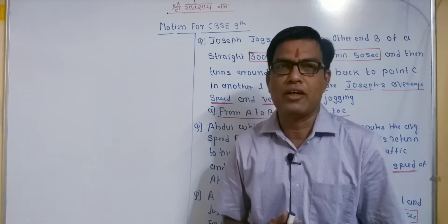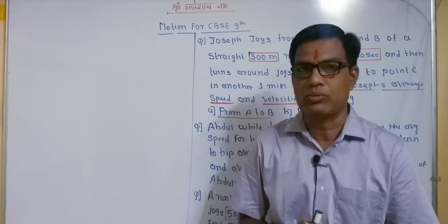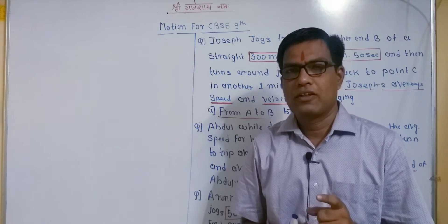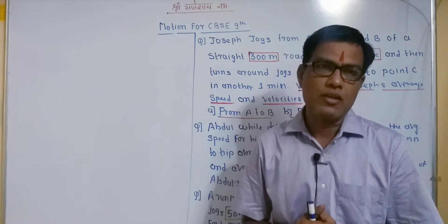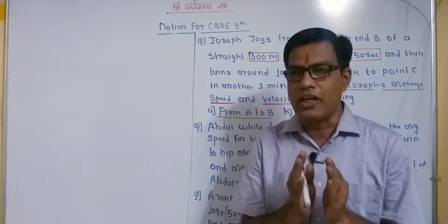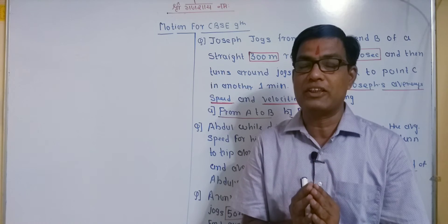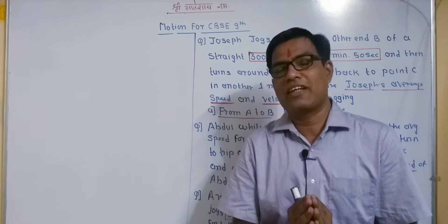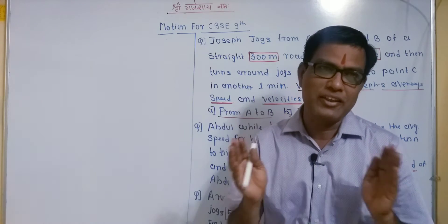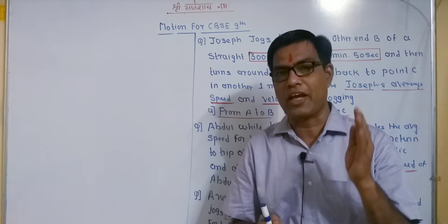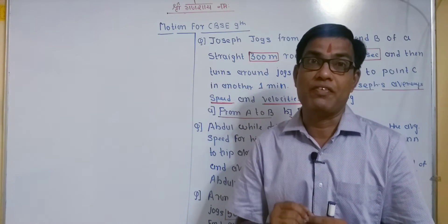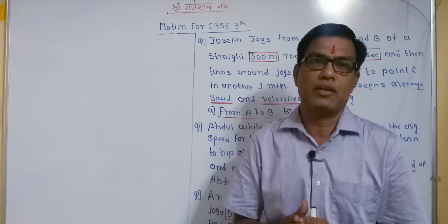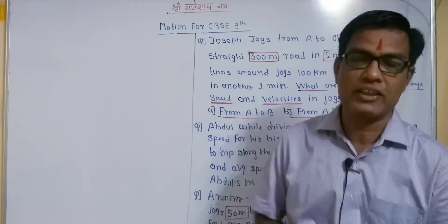These examples are from the exercise in your NCERT textbook, in the motion chapter. In physics, all examples are very easy, but if you can't understand the theory behind them or the given conditions in an example, you can't get the right answer. You must listen carefully, read carefully, and decide which formula is used, which concepts are used, and which parameters are required to solve the examples. That is most important. Let us discuss the first example.